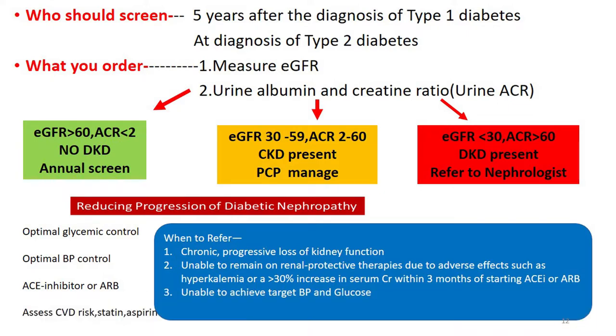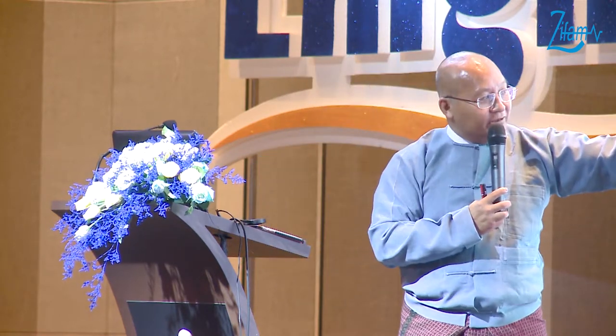When eGFR is between 30 and 59, manage diabetic nephropathy with optimal glycemic control, optimal blood pressure control using ACE inhibitors and ARBs, and assess cardiovascular risk — use statins and aspirin as needed. Refer to nephrology even with a currently acceptable GFR if there is chronic progressive loss of kidney function despite treatment, if you cannot maintain renal-protective therapy due to adverse effects such as hyperkalemia, or if you cannot achieve target blood pressure or glucose control. Don't forget referral to a diabetologist as well.